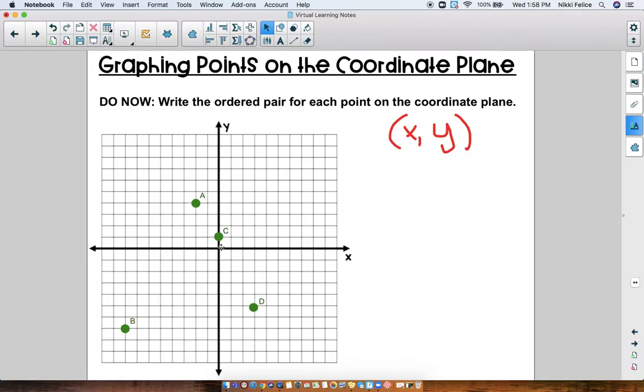So A is 1, 2 to the left, that's negative 2. And 1, 2, 3, 4 up, that's positive 4. So point A is negative 2, 4.